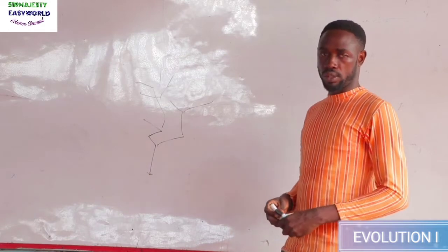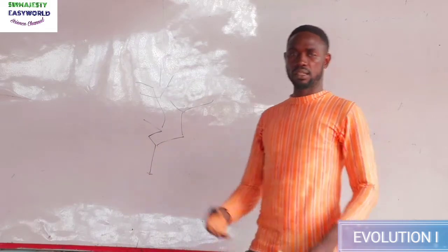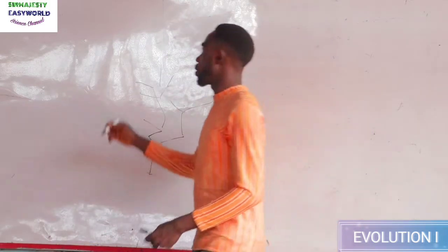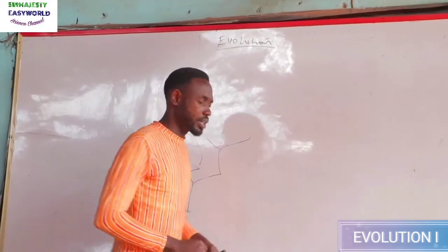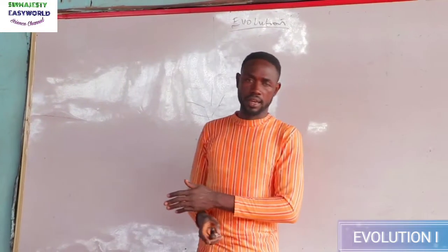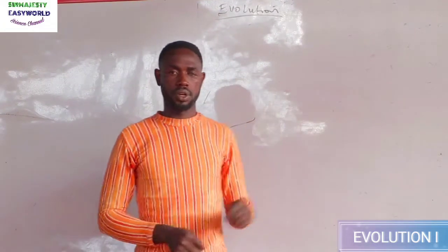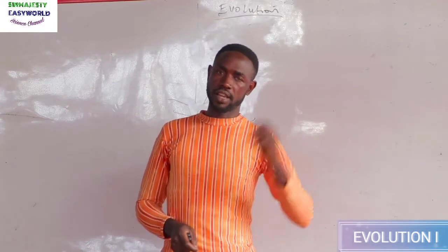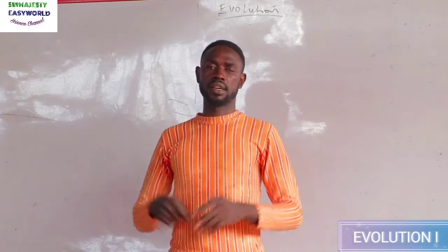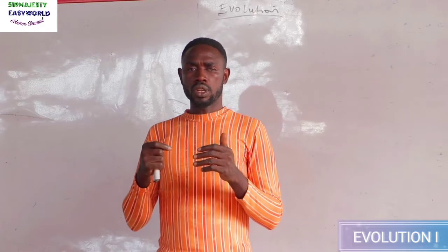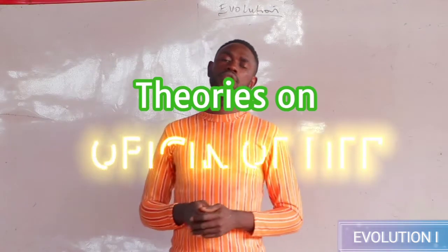Organic evolution holds that there are gradual changes undergone by the first form of life that produced the varieties of living things today. Before we continue, in organic evolution there has been effort to explain the source of life — the origin of life.